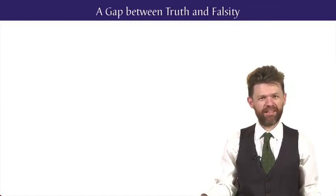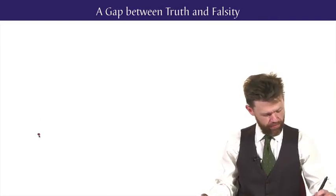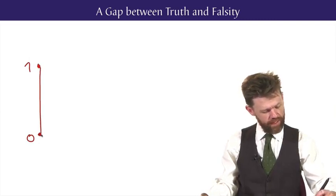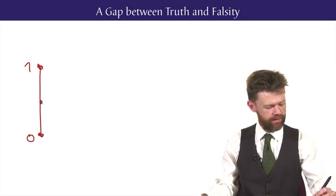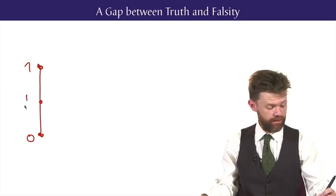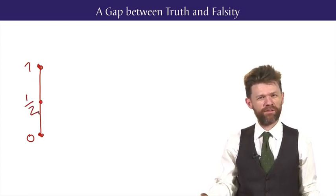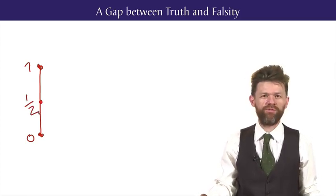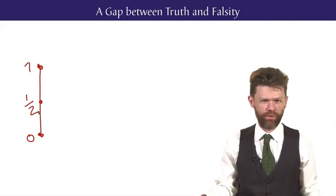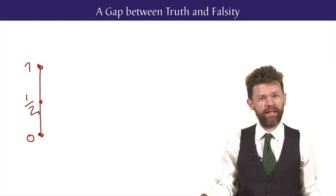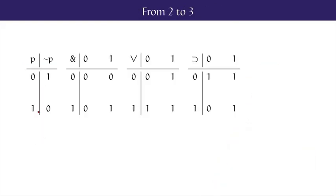One way to picture this is to think of a gap between the values of 0 and 1. We can think of there being a range of truth values in between 0 and 1, in particular, a truth value that we might call a half. This is an intermediate truth value, suspended halfway between truth and falsity. It makes sense to think of borderline cases as taking this intermediate truth value. So let's see our truth tables and think about how we might expand the picture to include this new truth value.